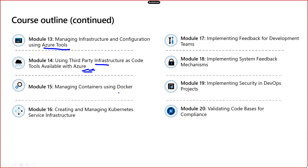Next we'll talk about Docker — how you can design Docker, create Docker applications, and deploy them. We'll also talk about Kubernetes, which has become famous. It's a Google platform available in Azure, called Azure Kubernetes Services. We'll create a Docker image and deploy those images into Kubernetes Services. We'll see the steps for deploying Kubernetes Services from Azure DevOps.